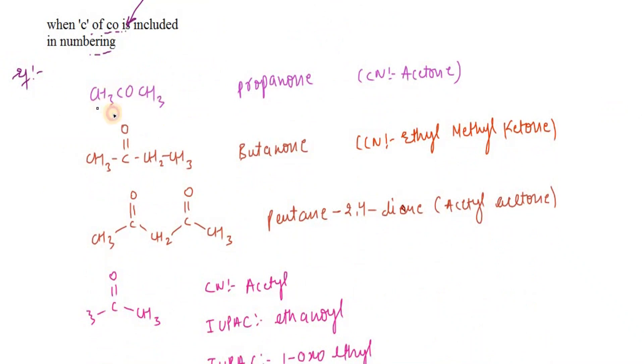Let's see some examples of how we name ketones. CH3-CO-CH3 is propanone. We do not need to write the location of oxygen because it is understood. The common name is acetone. CH3-CO-CH2-CH3 is butanone. Again, we don't need to specify the location of oxygen. The common name is ethyl methyl ketone.